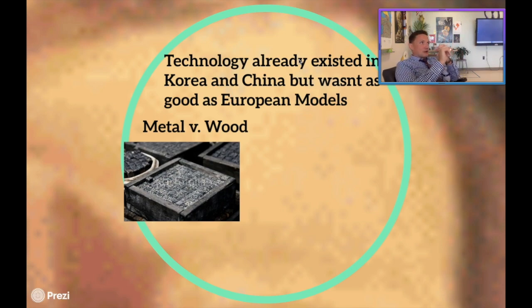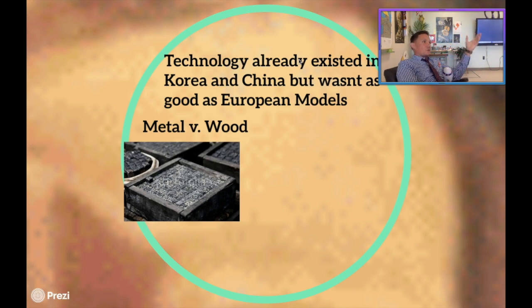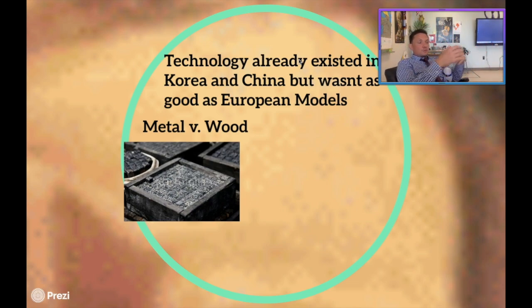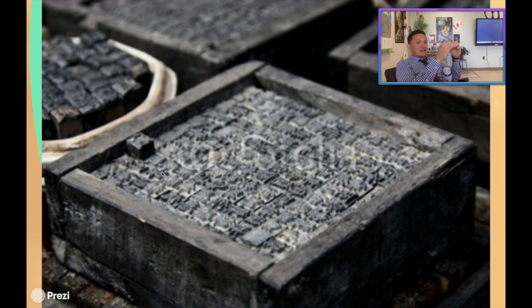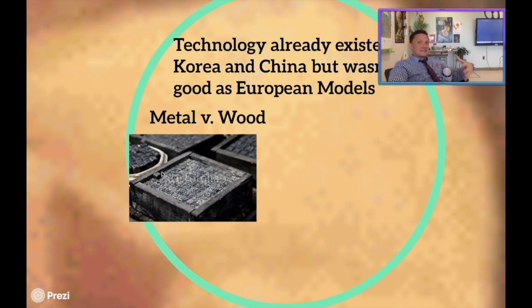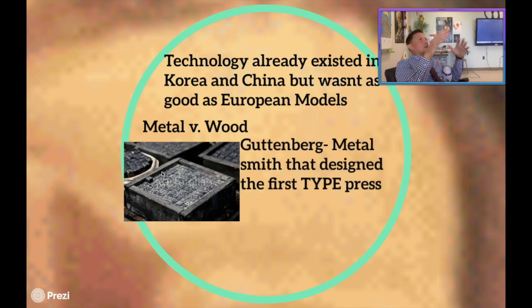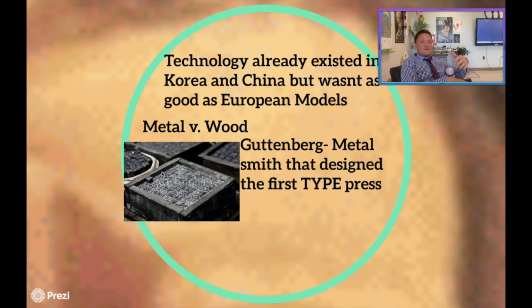We started talking about how the original idea for the printing press was not created by Gutenberg — it was actually an Asian design that had existed for several hundred years, particularly coming out of Korea and China. Unfortunately, they weren't as good in quality as the Gutenberg press, due to the fact that Gutenberg's were made out of metal. The wooden types that Asiatic communities were using would actually fall apart over time. The big stroke of genius was when Gutenberg showed up as a metalsmith and designed the very first movable type printing press that Europe had ever seen.